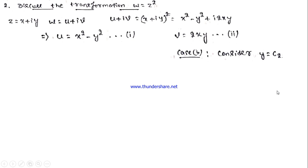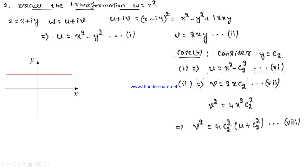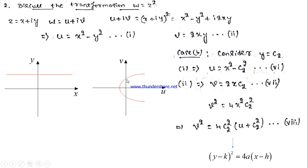Similarly, consider y = c2 (a straight line parallel to the x-axis). Substituting and squaring the u equation, then substituting x² from the v equation, we get v² = 4c2²·x² and x² = (u + c2²)/... leading to v² = 4c2²(u + c2²). This is a parabola with axis along the positive u-axis and vertex at (−c2², 0) on the negative u-axis. So the family of straight lines parallel to the x-axis transforms to parabolas with axis along the positive u-axis and vertices on the negative u-axis.